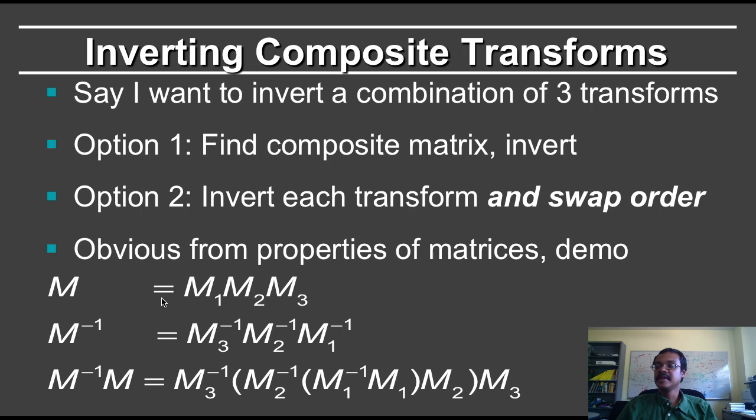So here, M is equal to M1, M2, M3, where M3 was the first transformation applied to the object, then M2, then M1. Now, the inverse is going to be M3 inverse, M2 inverse times M1 inverse. And we can see how that works out.